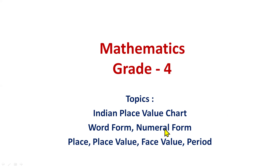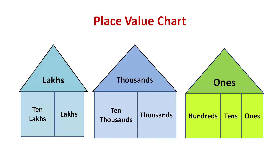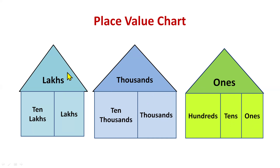What is a place value chart? A place value chart is used to read and write numbers. Imagine there are three houses: ones house, thousands house and lakhs house. In ones house only three members can live — ones, tens and hundreds. In thousands house only two members can live — thousands and ten thousands. In lakhs house again only two members can live — lakhs and ten lakhs.